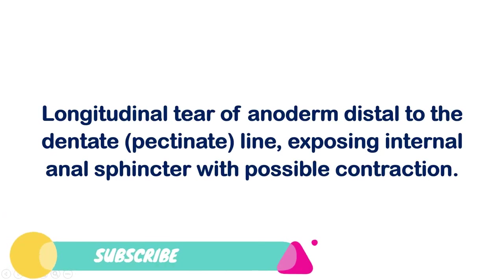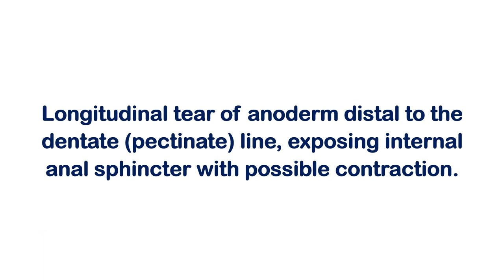The definition of an anal fissure is a longitudinal tear of the anoderm — that's just a fancy word for the epithelium of the anus and the area around the anal canal. This is a longitudinal tear that is distal to the dentate line, also called the pectinate line, and it will expose the internal anal sphincter, causing a possible contraction after it is exposed to the outside.